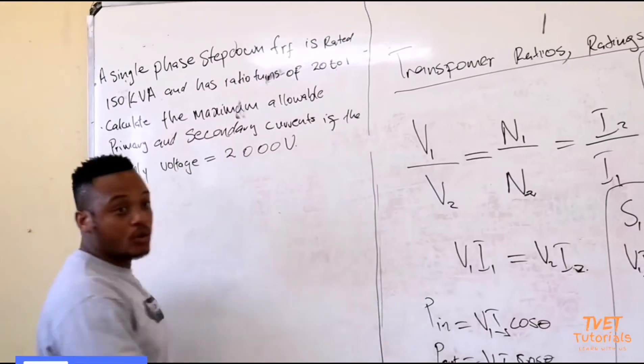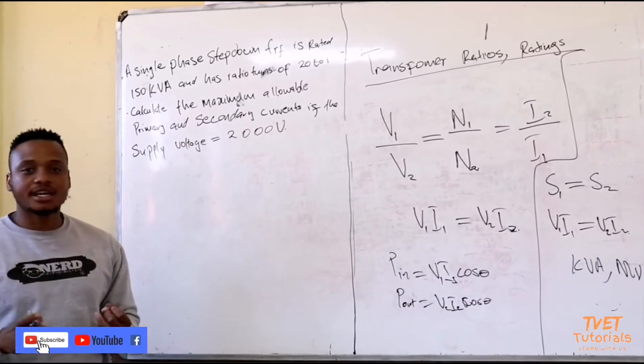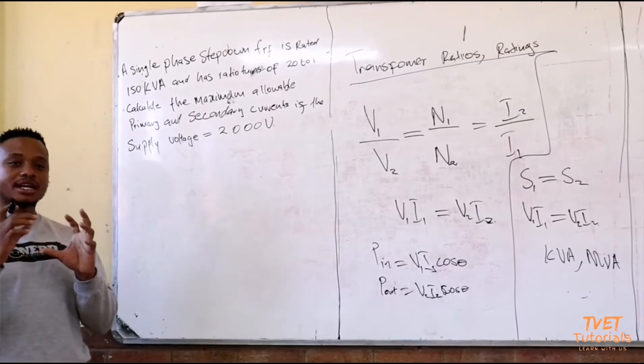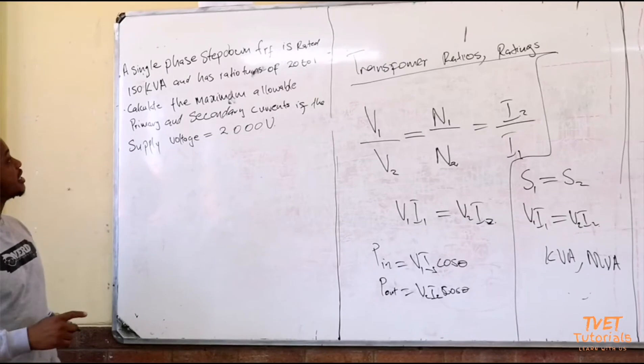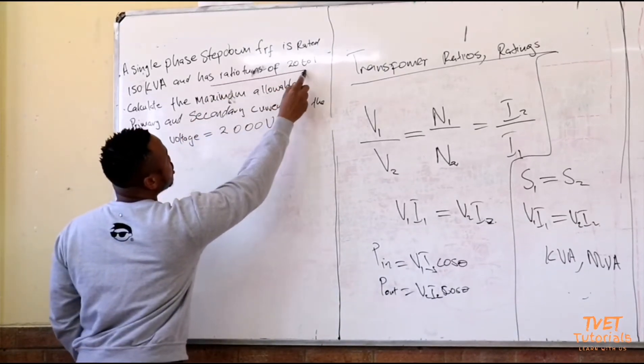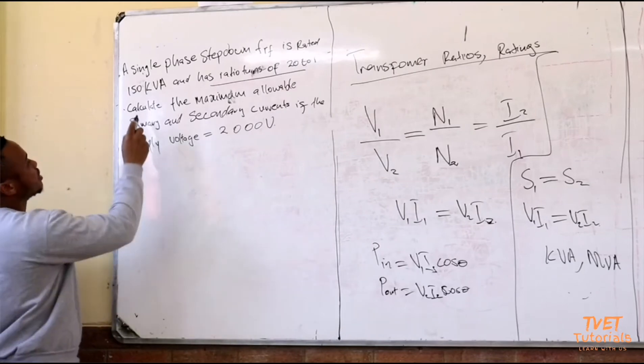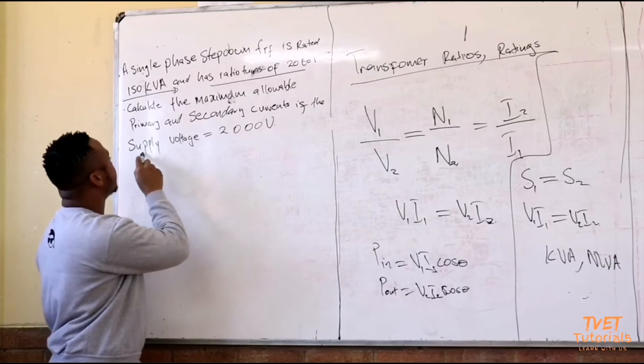The first thing that you would want to do is to first write out the equations that you want to use and also write your given data. From this question I can see that I will need my transformation ratio, I will also need to use my kVA ratings.